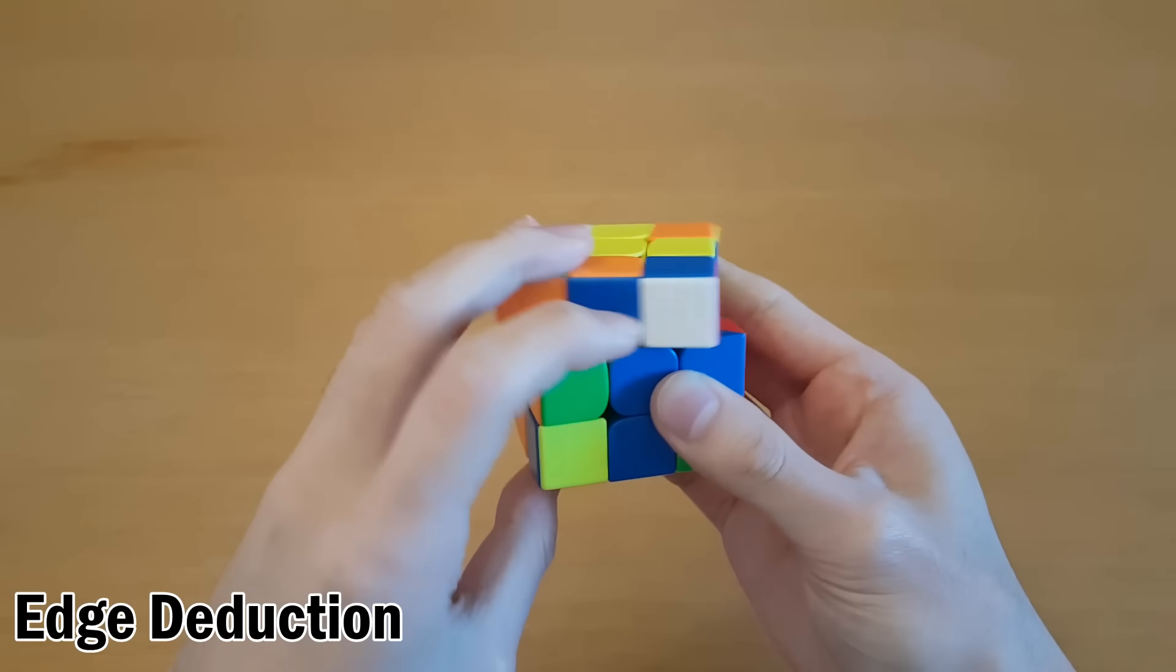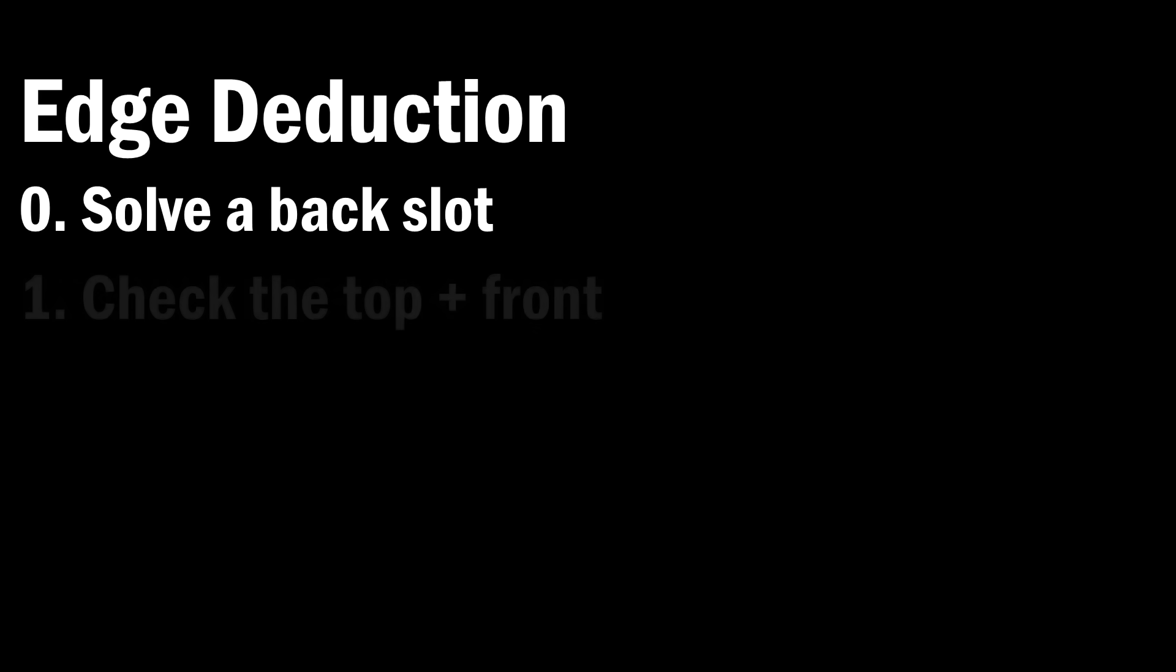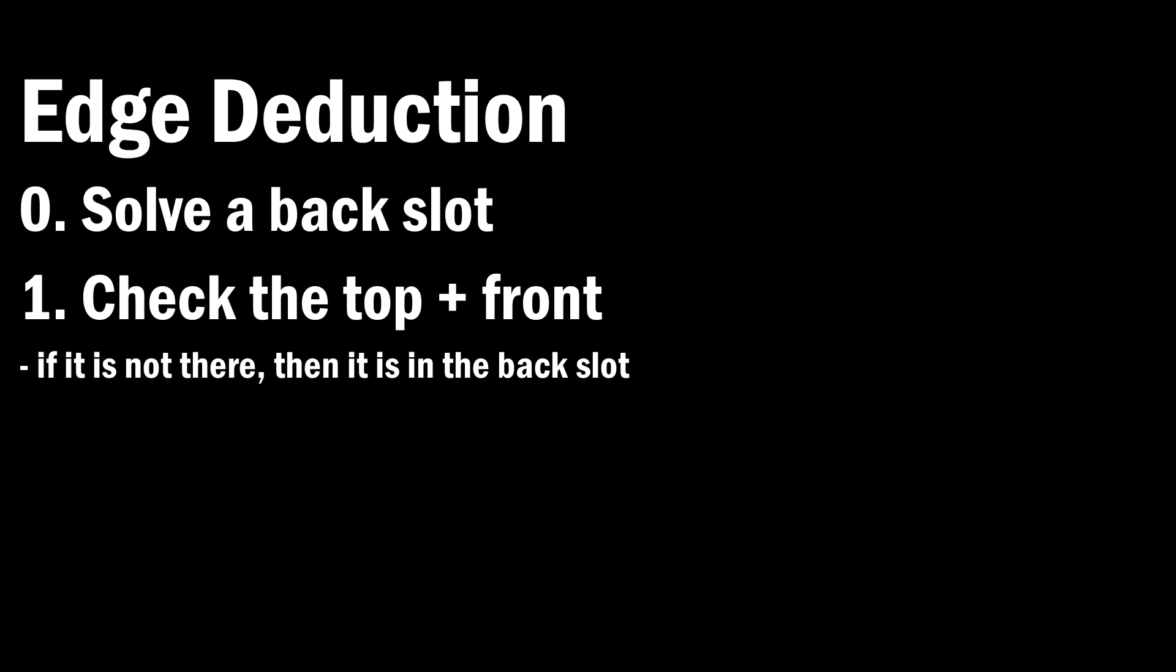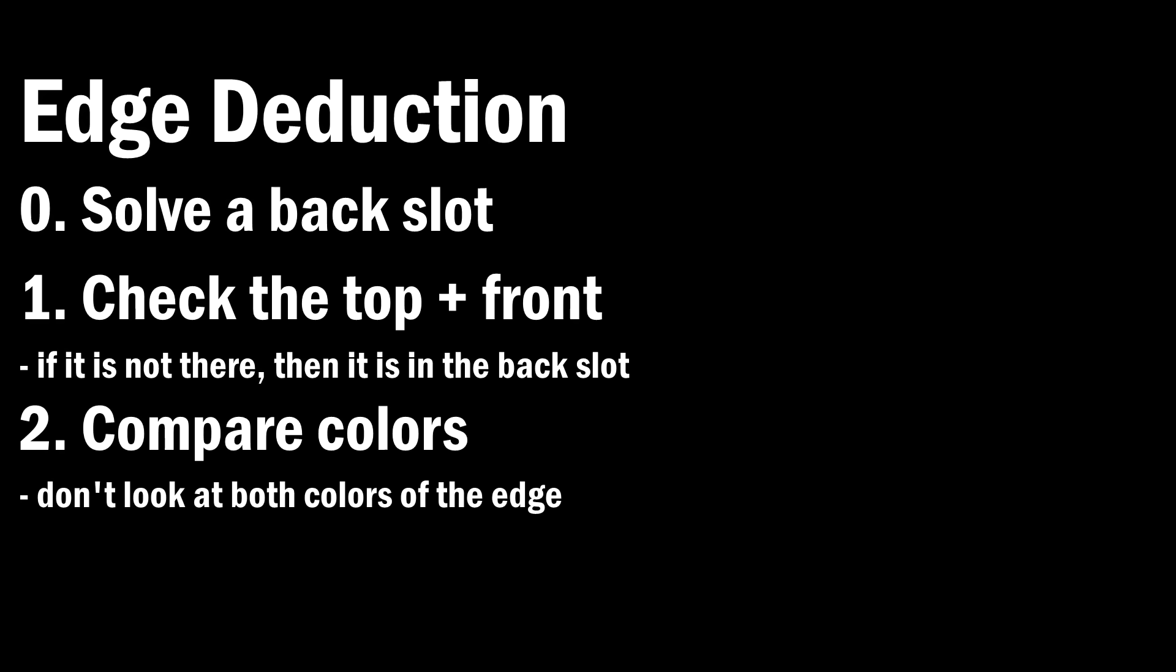And if they were not matching, then you would have to do a different solution. So a quick review for how this works for edges. Make sure one backslot is solved, and if you can do that as your first pair, that's even better. Look for the edge on top and in the front slot. If they are there, then obviously you have found it. But if they are not there, then it is in the backslot. Then compare the backslot edge's color to the center next to it. That is the only information you get on the orientation of that edge. You don't get to look at both colors of the edge because that would just defeat the whole purpose of what we're doing here. Then of course, solve the case.